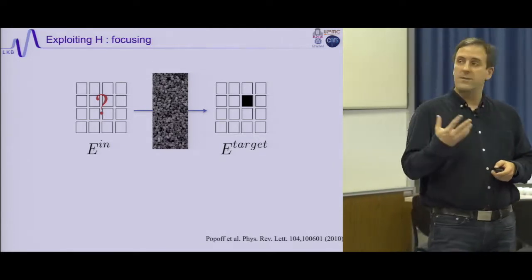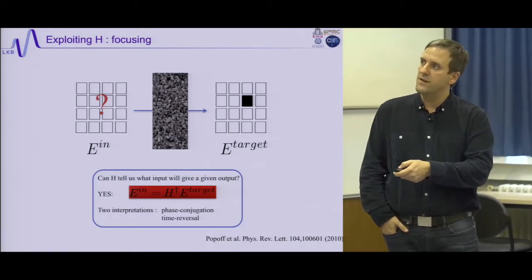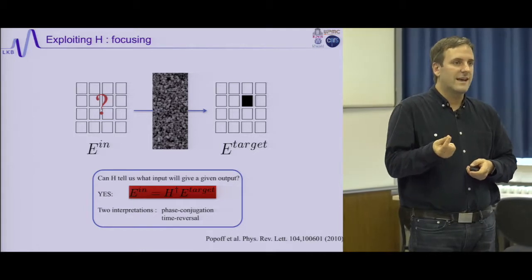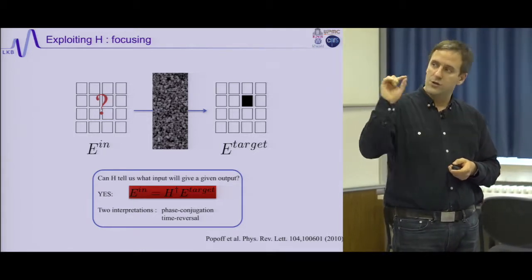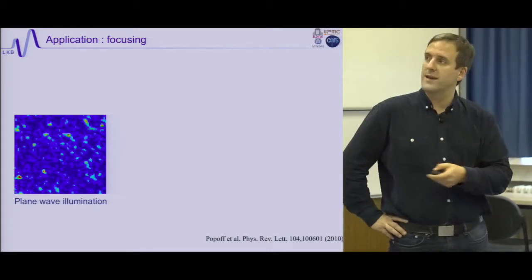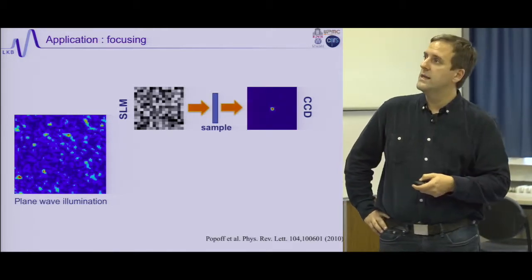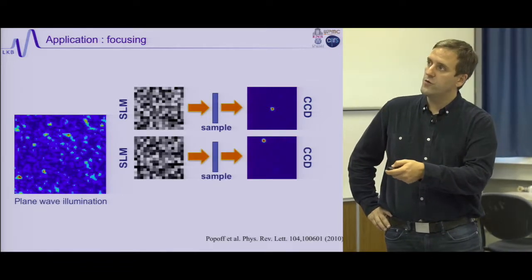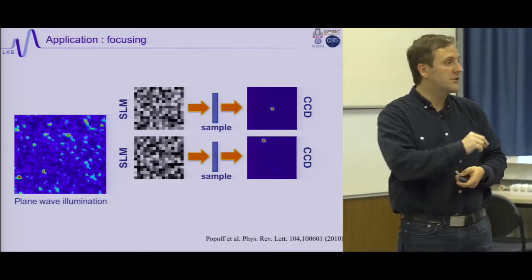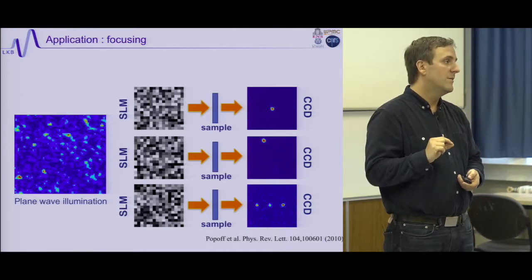When I have the transmission matrix, I can find the pattern to display on the SLM to focus light anywhere. The solution is simple: display H† times the target, where H† is the transpose conjugate of H — this is exactly a phase conjugation operation. The result: from a speckle pattern when shining a plane wave, I calculate the phase mask (gray level = phase), display it on the SLM, and obtain a very bright focus on my camera.